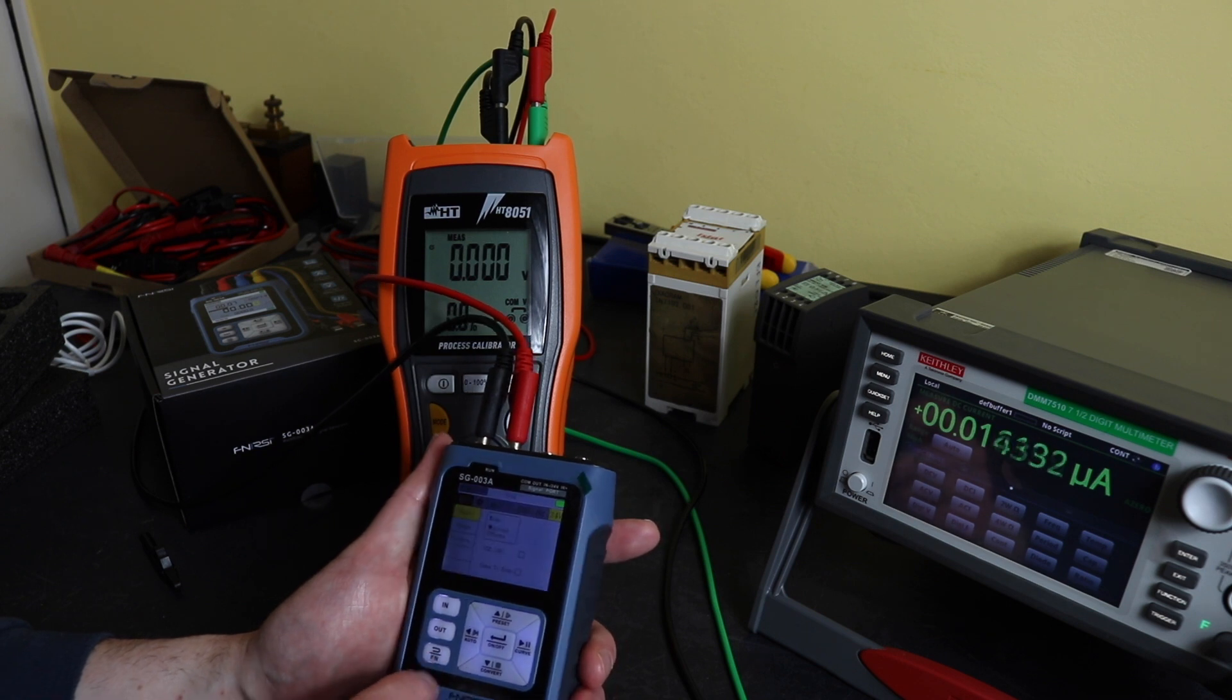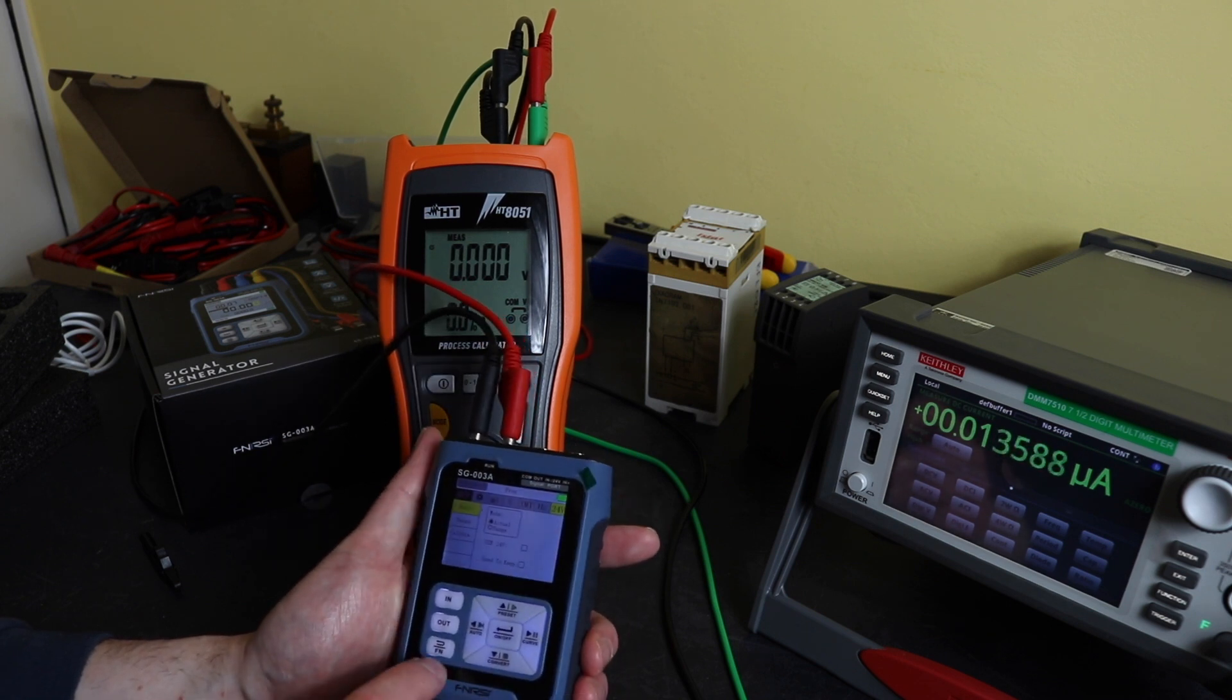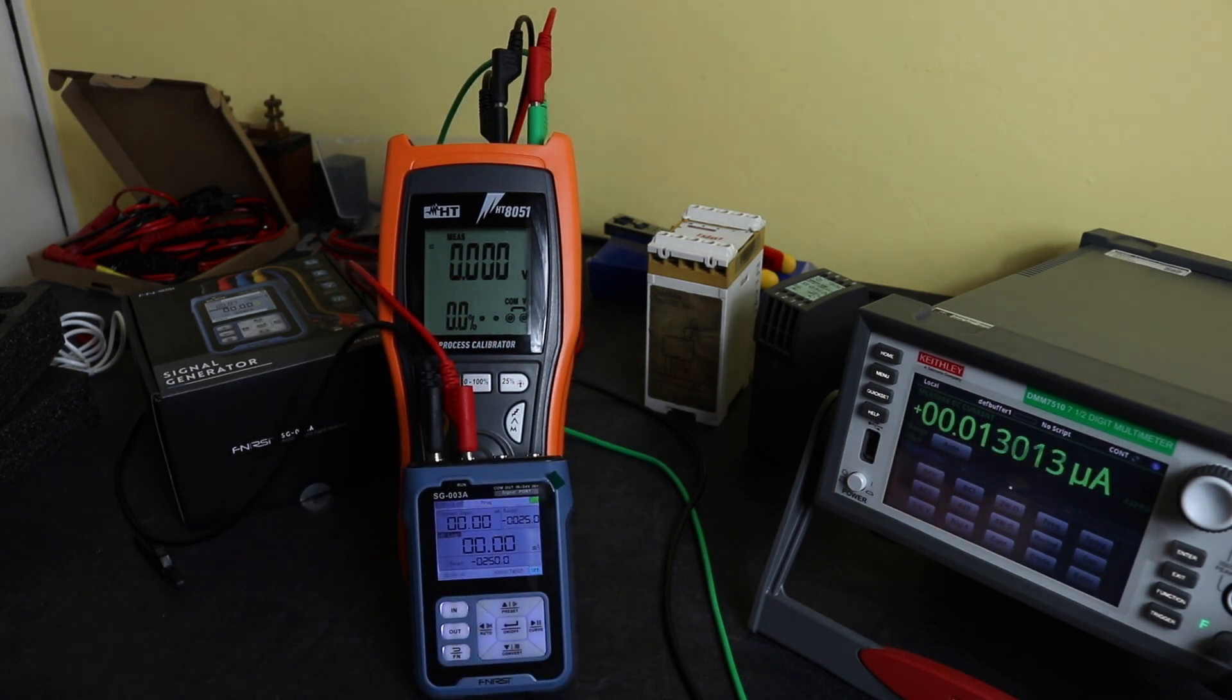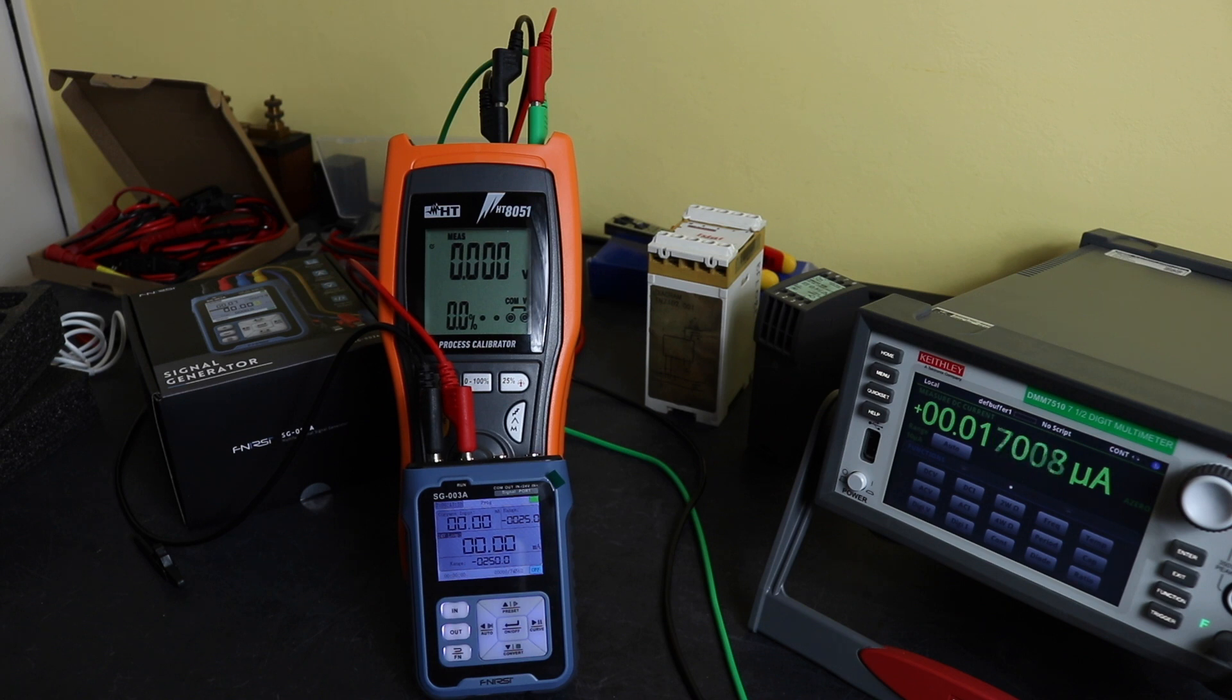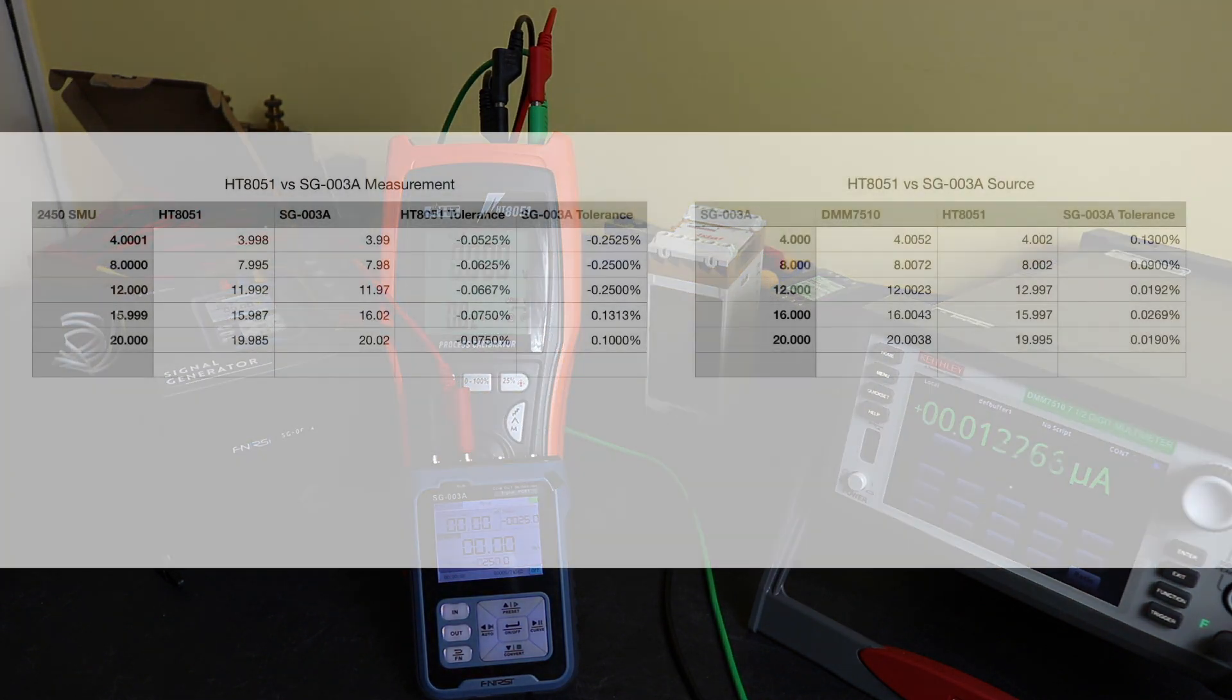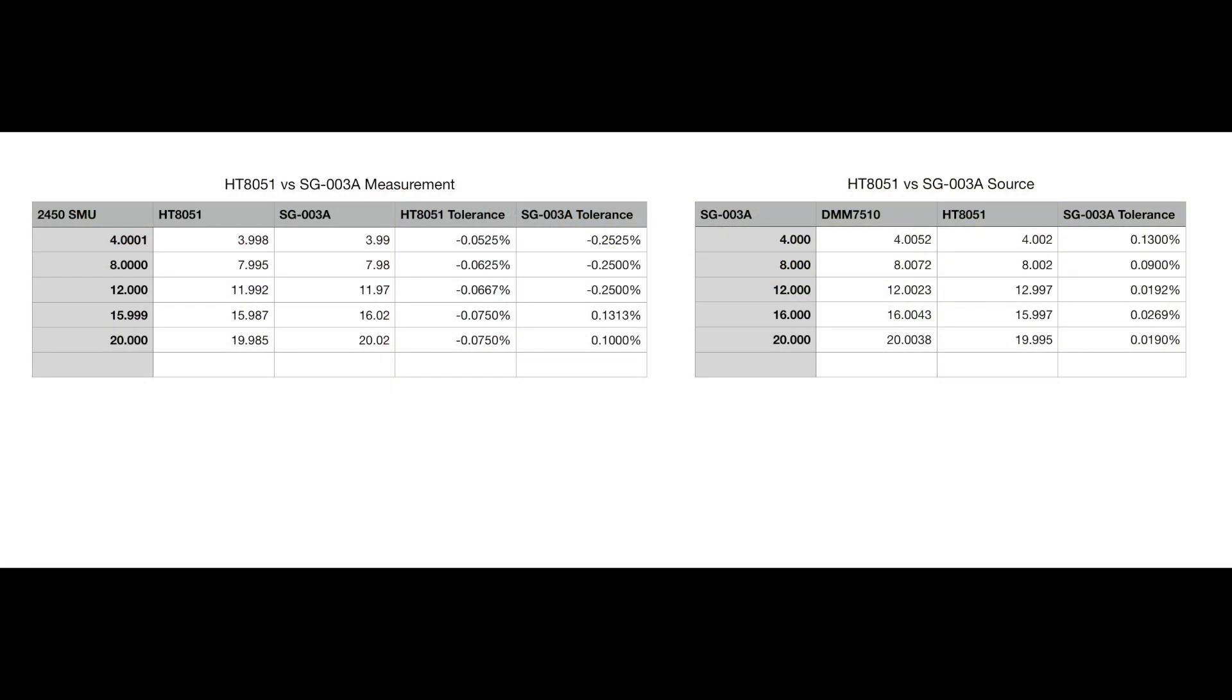I'll put the tables up now for the actual results of the measurements that I made. If you take a look across them, the unit is actually better at sourcing, more accurate at sourcing the output current rather than the measuring of it. We did see that whilst you were measuring it, you did actually lose one of the decimal points. There's only two decimal points for the measurement instead of the three that you see on the HT8051. There's room for improvement on the measurement function, but sourcing it does seem to be pretty good.